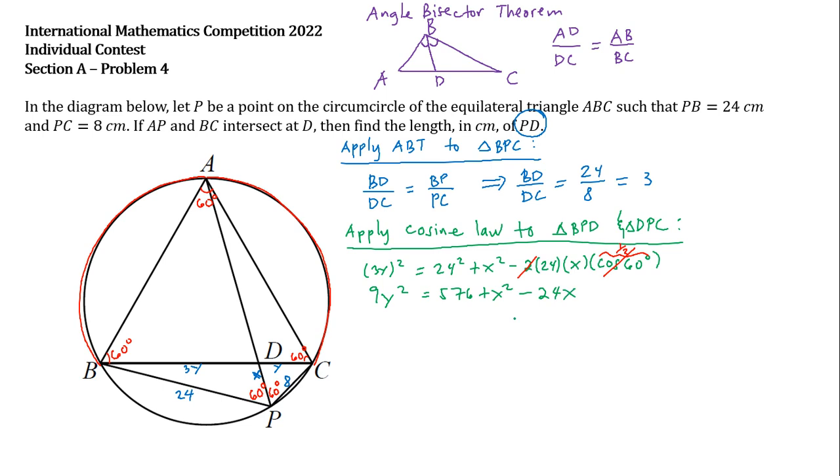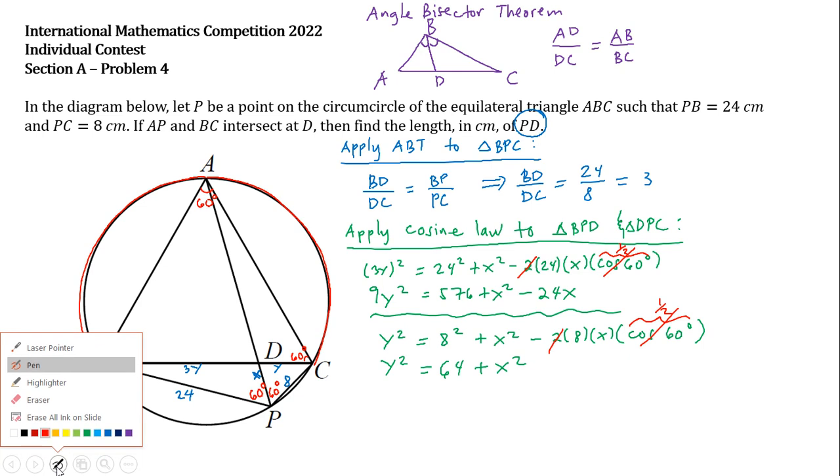Let us also apply cosine law to triangle DPC. So we have Y squared equals 8 squared plus X squared minus 2 times 8 times X times the cosine of 60 degrees. So we have Y squared equals 64 plus X squared minus 16. But this one is likewise 1 half, so we can just cancel this, and so we have minus 8X.